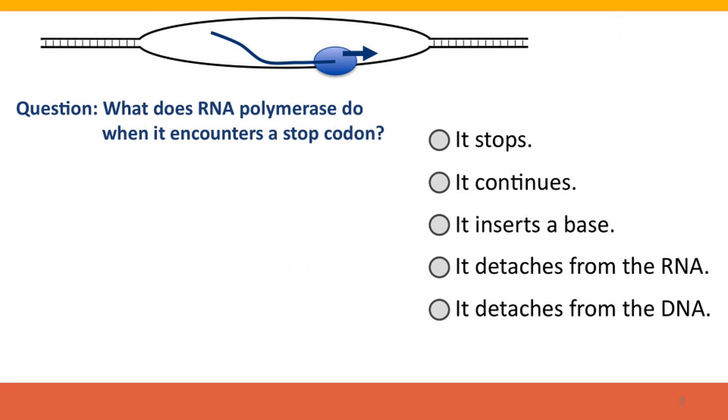So here's a question. What does RNA polymerase do when it encounters a stop codon?